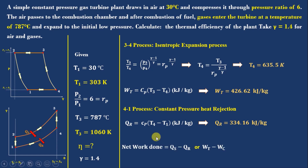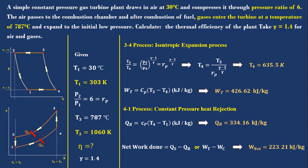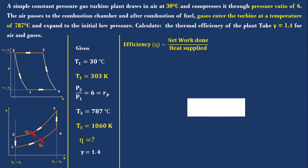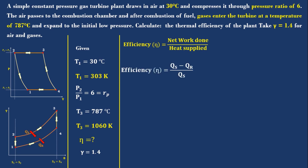Now we find net work done, which equals heat supplied minus heat rejected, or work produced minus work consumed: Wnet = Qs − Qr = Wt − Wc = 233.21 kJ/kg of air. The thermal efficiency is: η = Wnet / Qs = (Qs − Qr) / Qs = 40.04%. This problem is solved without considering turbine and compressor efficiency, meaning both are taken as 100%.